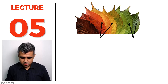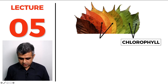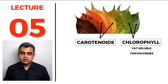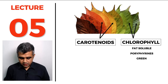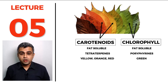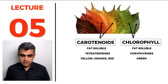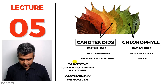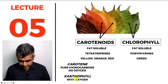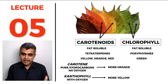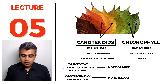The pigments ranging from yellow-orange to red are called carotenoids. So there are two types of pigments in plants: chlorophyll and carotenoids. Chlorophyll is fat soluble, chemically a porphyrin group, and green in color. Carotenoids are also fat soluble, are tetraterpenes, and range from yellow-orange to red. Carotenoids are of many types; two common examples are carotene — containing only C40H56 with no oxygen, more orange — and xanthophyll — C40H56O2, more yellow.